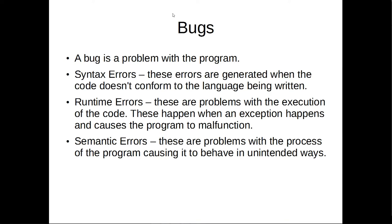The first thing we want to talk about are bugs. Bugs are problems with your code. They can be syntax errors where you've written the code wrong, runtime errors where something has gone wrong during the execution, or a semantic error — neither a problem with the code nor the runtime, but a problem with the algorithm where you don't get the expected result. These are things you need to think about as you're building and developing your programs.